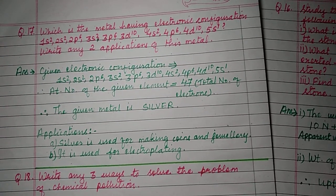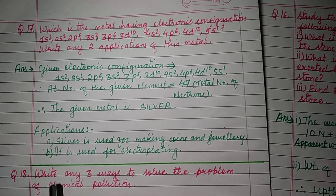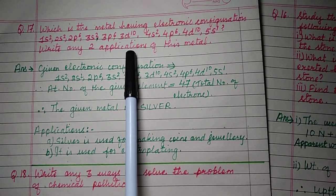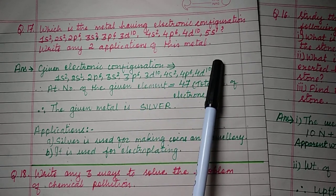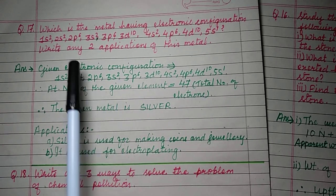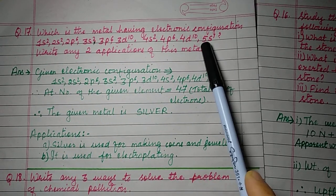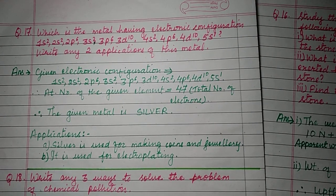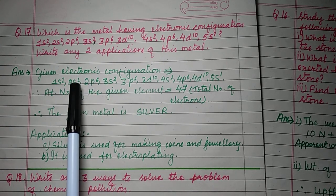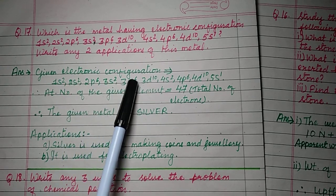Question number 17: which metal has the electronic configuration 1s² 2s² 2p⁶ 3s² 3p⁶ 3d¹⁰ 4s² 4p⁶ 4d¹⁰ 5s¹? Write any two applications of this metal. To find the name of the metal, you need to know the atomic number. The atomic number equals the number of electrons.